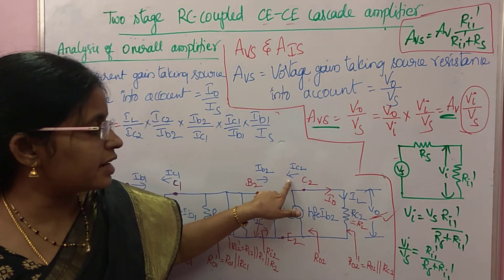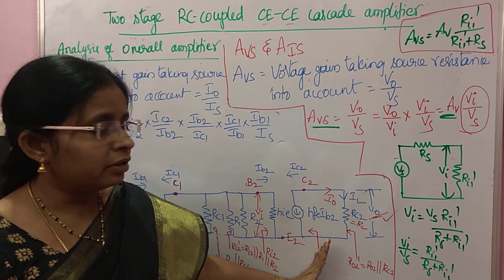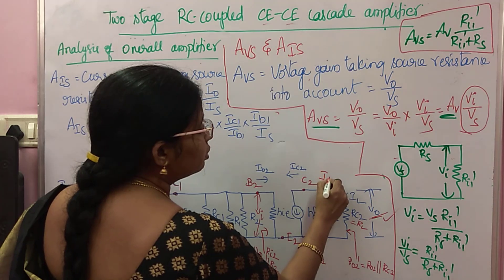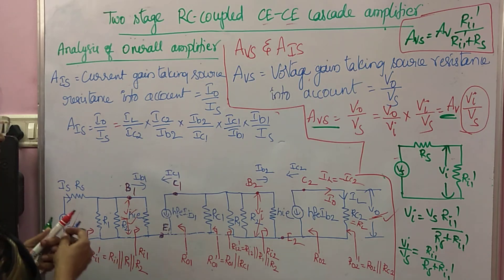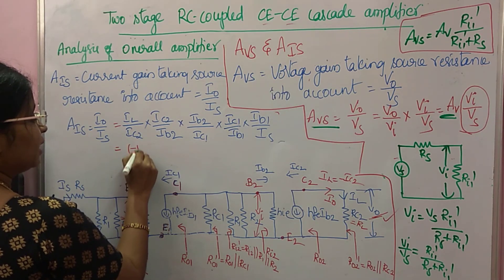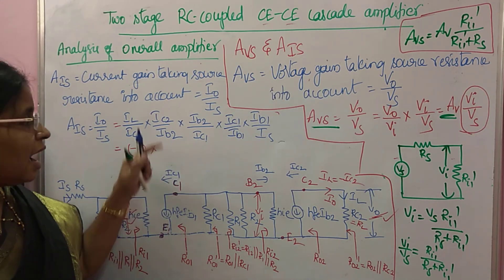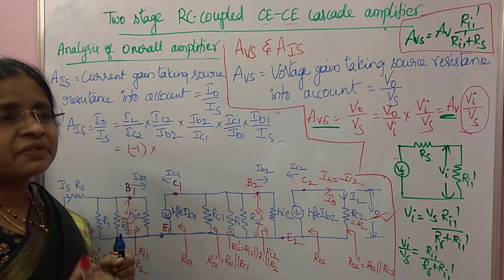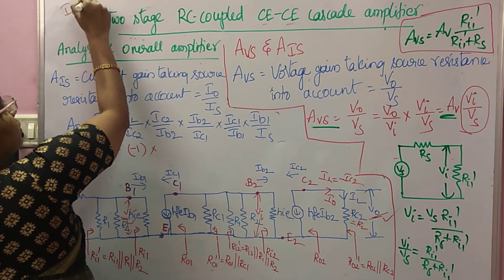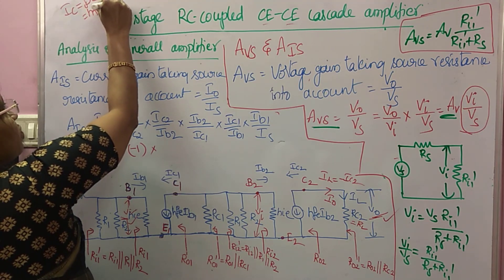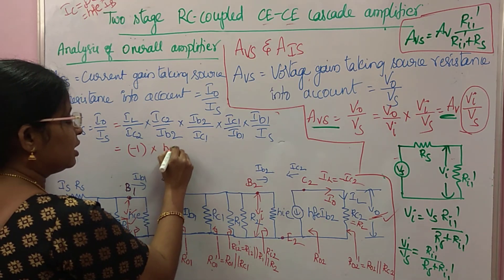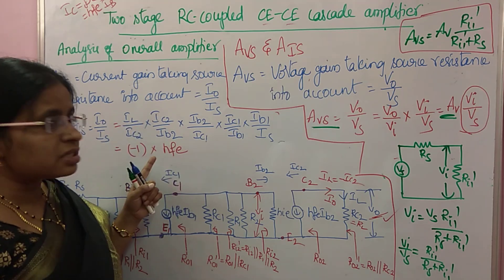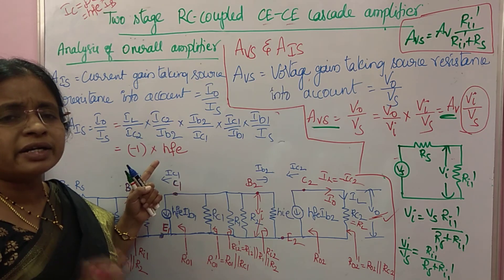For the first factor: IL and IC2 are in opposite directions, so IL equals minus IC2, which means IL by IC2 equals minus 1. For the second factor: we know IC equals beta times IB, where beta is also called hFE. Therefore IC2 by IB2 equals hFE, and similarly IC1 by IB1 equals hFE for any stage.